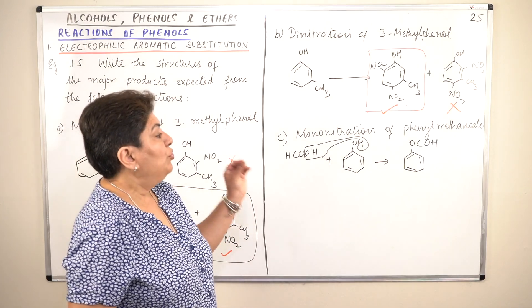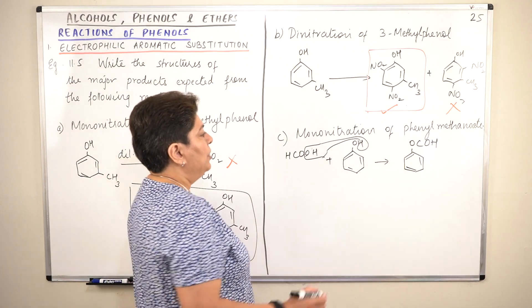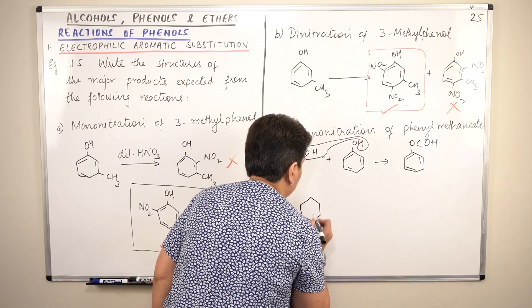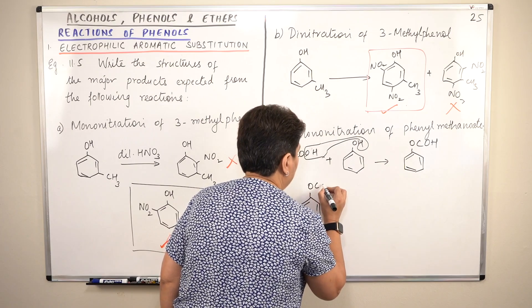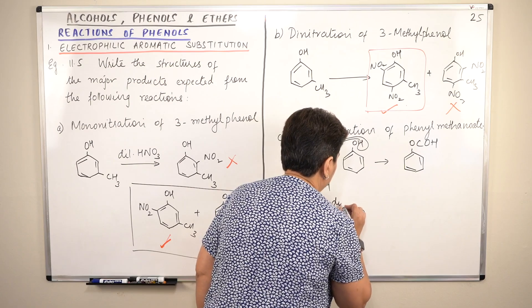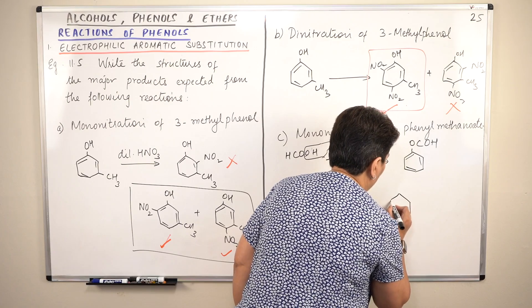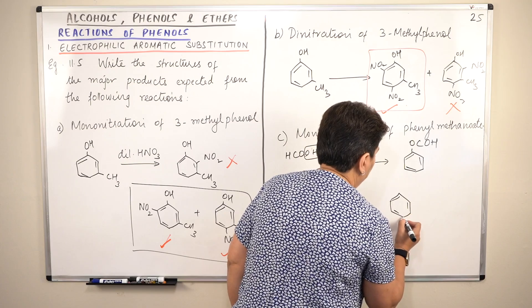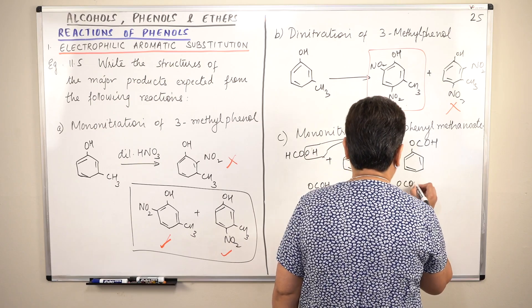Right. Now mononitration of phenyl methanoate. Phenyl methanoate is also ortho-para directing. Okay. So you will get the mononitration when it occurs. So it will be in the presence of dilute nitric acid. OCOH. And dilute HNO3. Ortho-para directing. Therefore what will be the major product? Obviously between ortho and para, the para isomer is always more stable.